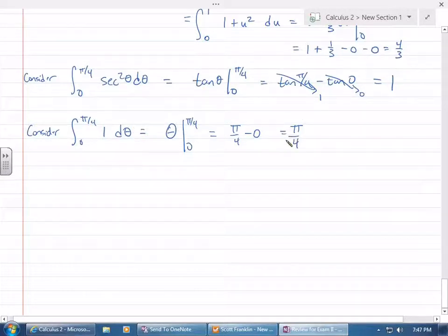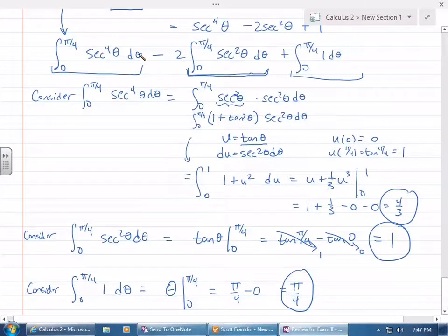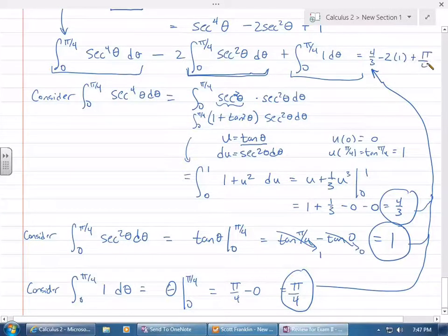So if you plug all of those in, what you get is this minus 2 of these plus this, right? From here, I'm going to take all these, plug them back in right there, and I get 4 thirds minus 2 times 1 plus pi over 4.